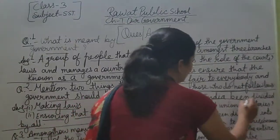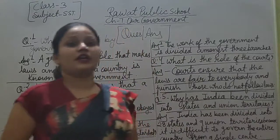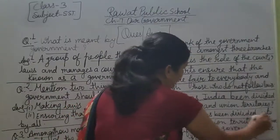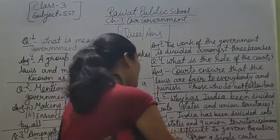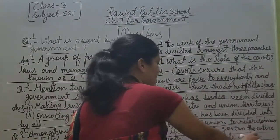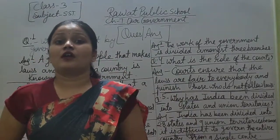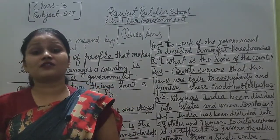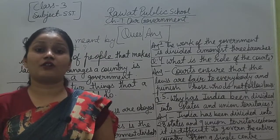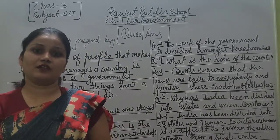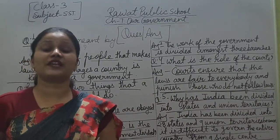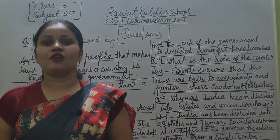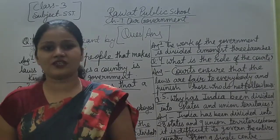Now question number 5: why has India been divided into states and union territories? India has been divided into states and union territories because it is difficult to govern the entire country from a single center. So India is divided into 28 states and 9 union territories.